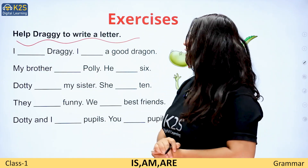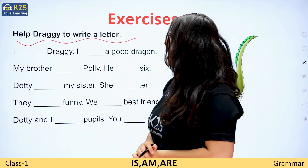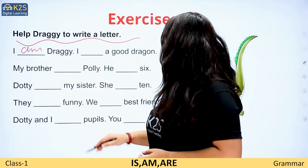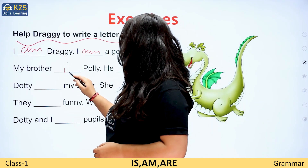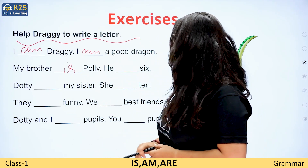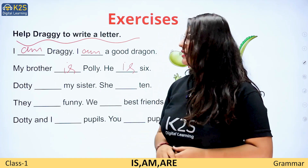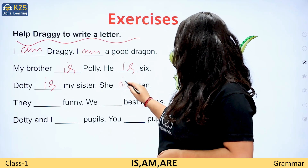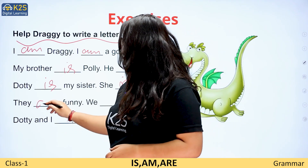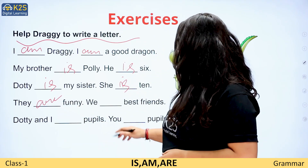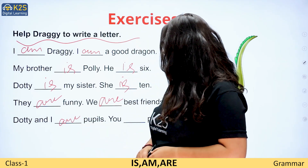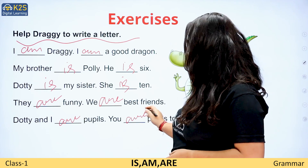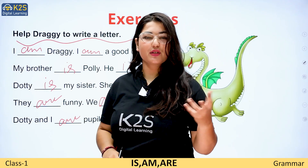Now let's help Draghi write a letter. I am Draghi. I am a good dragon. My brother is Poli. He is six. Dottie is my sister. She is ten. They are funny. We are best friends. Dottie and I are pupils. You are pupils too. Take care — pupils means students.